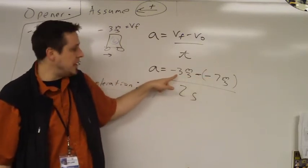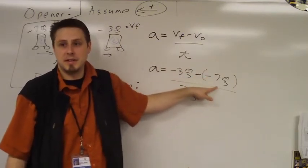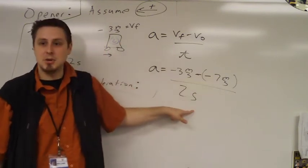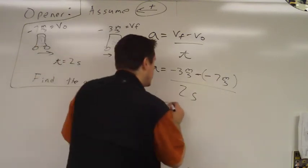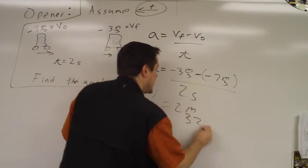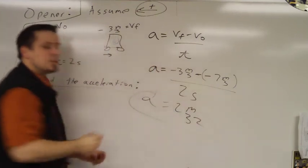So negative 3 plus 7 gives you what? 4. 4 divided by 2 gives you 2. Positive or negative? Positive. Positive 2 meters per second squared.